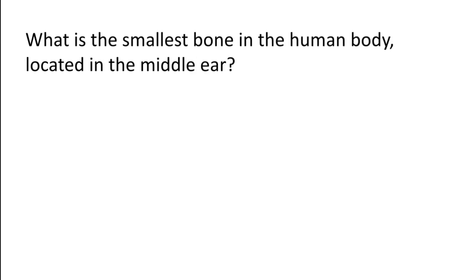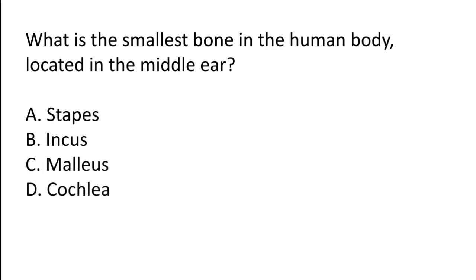What is the smallest bone in the human body located in the middle ear? Options: Stapes, Incus, Malleus, Cochlea. The correct answer is option A — Stapes is the smallest bone in the human body, located in the middle ear.